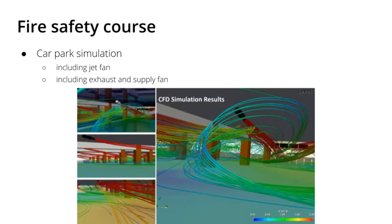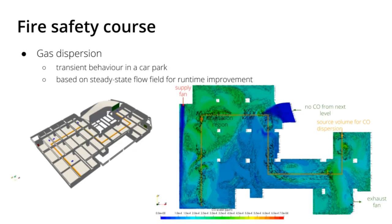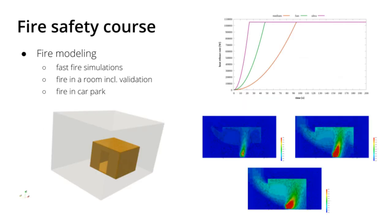For example, a car park simulation with a complex geometry with jet fans, exhaust, and supply fans. Then gas dispersion in a similar car park with supply and exhaust, and how you can define a CO source in this geometry and calculate the CO dispersion in a car park. Then fire modeling in a room, as you see in this slide, with different heat release rates and heat release rate curves — so it's not just a constant heat release rate — and how you can define that in a room or in a similar car park.